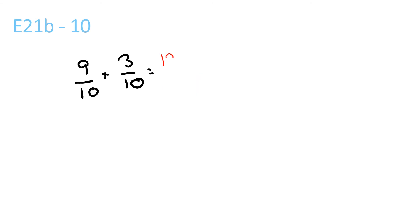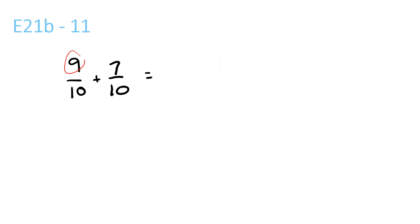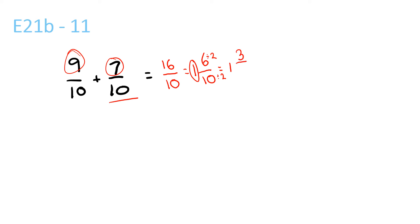9 plus 3 is 12 over 10, equals 10 goes into 12 once with a remainder of 2 over 10. 2 divided by 2 and 10 divided by 2 is equal to 1 and 1 over 5. Next, 9 plus 7 is 16, over 10 — the bottom one stays the same. 10 goes into 16 once with a remainder of 6 over 10. That equals 6 divided by 2, 10 divided by 2 — so 1 and 3 over 5.